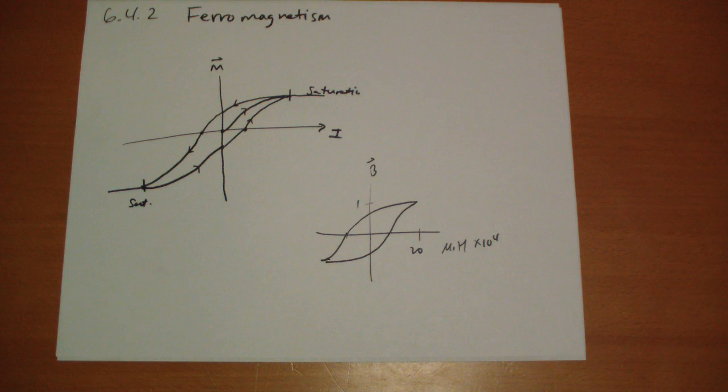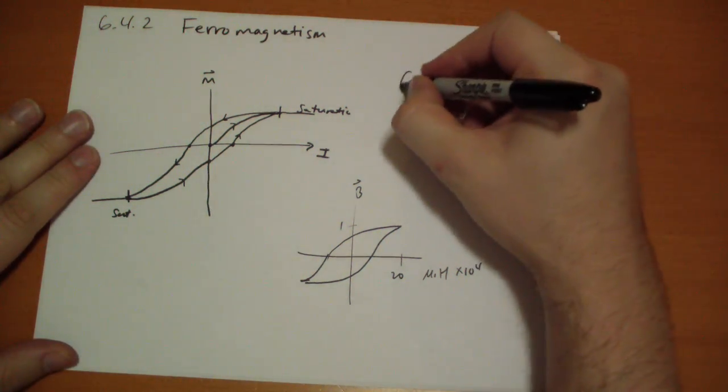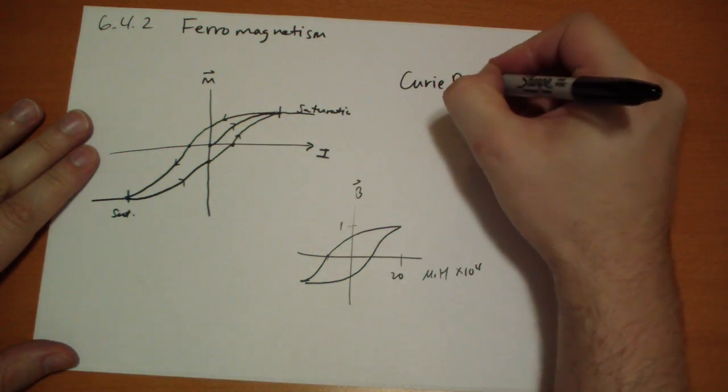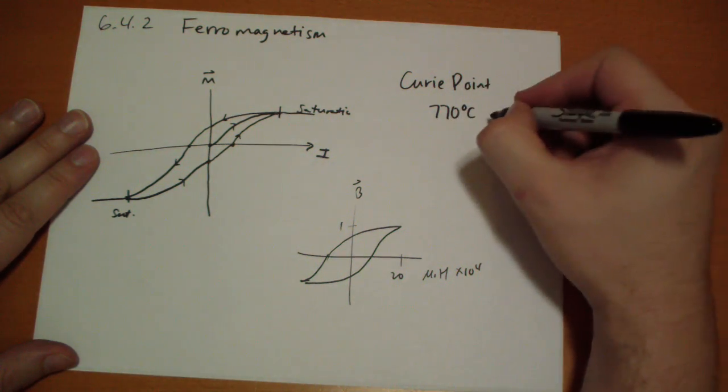So the reason for that is that the dipoles inside the material really do like to line up. There's a reason for that. Again, I can't really explain unless I get into quantum mechanics. One interesting thing is the Curie point. This is 770 degrees centigrade for iron.